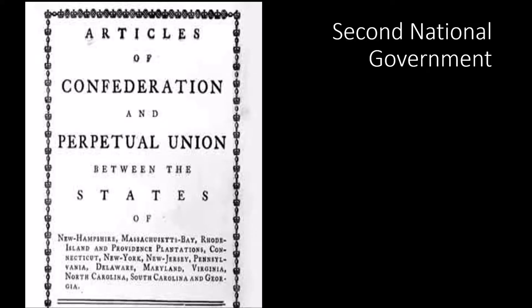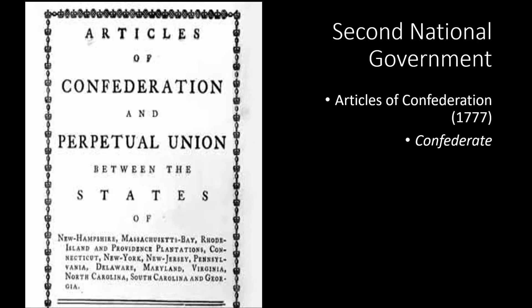What comes out of the Continental Congress is the Articles of Confederation. This is, for all intents and purposes, our second national government. The articles are drafted in 1777, in the middle of the Revolutionary War. It's a confederate government, basically meaning it's a group of states that agree to come together as a confederation and work together, but it's very loosely connected compared to what we think of as national government today.